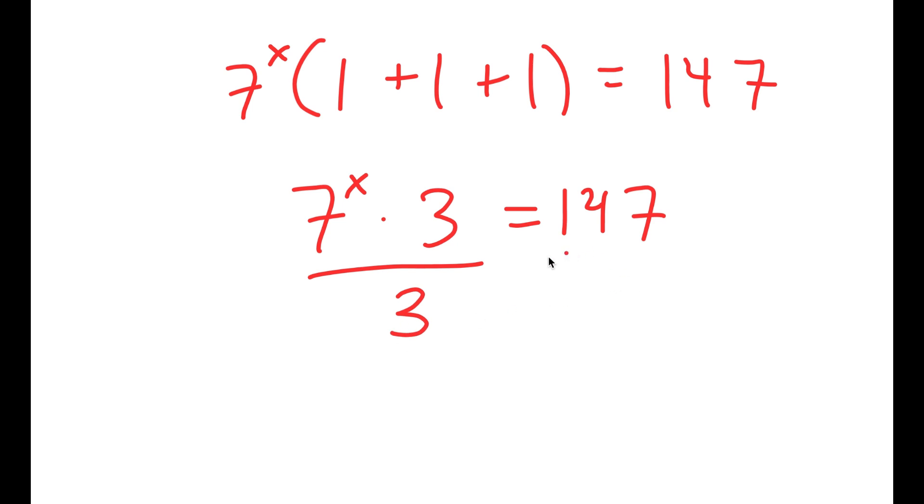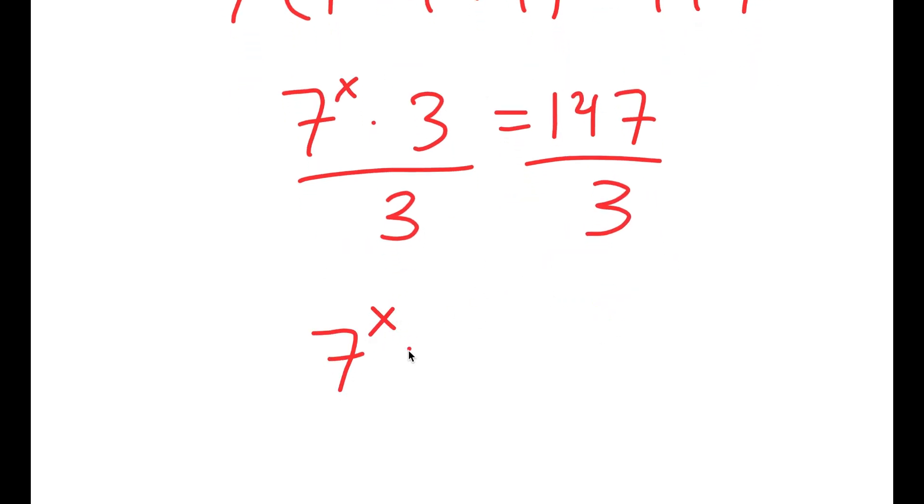Now from here, I'm going to divide both sides by 3. So 7 to the power of x is equal to 147 divided by 3, which is going to equal 49.